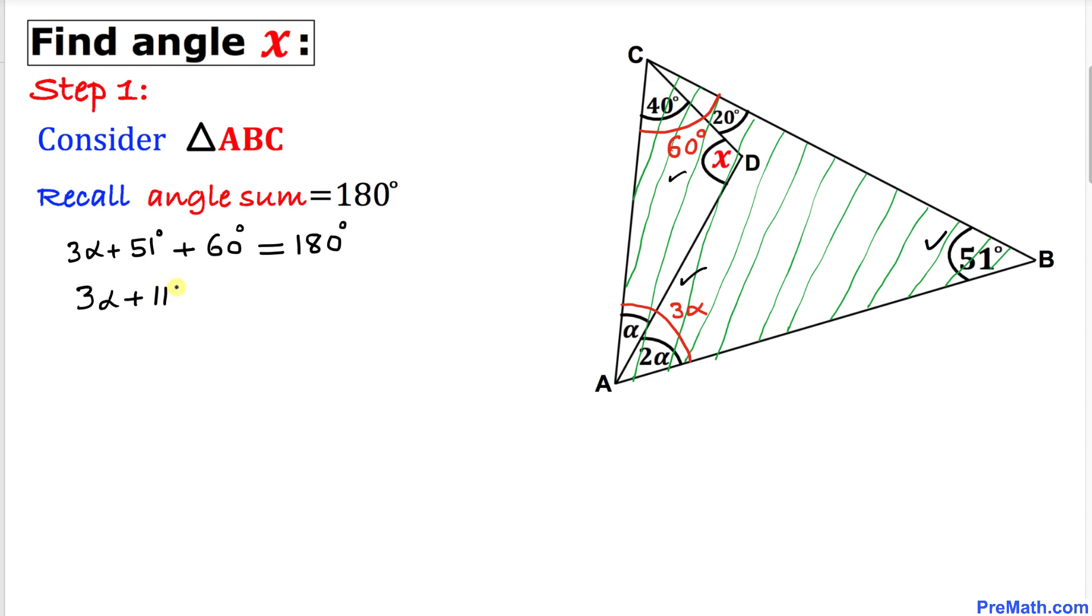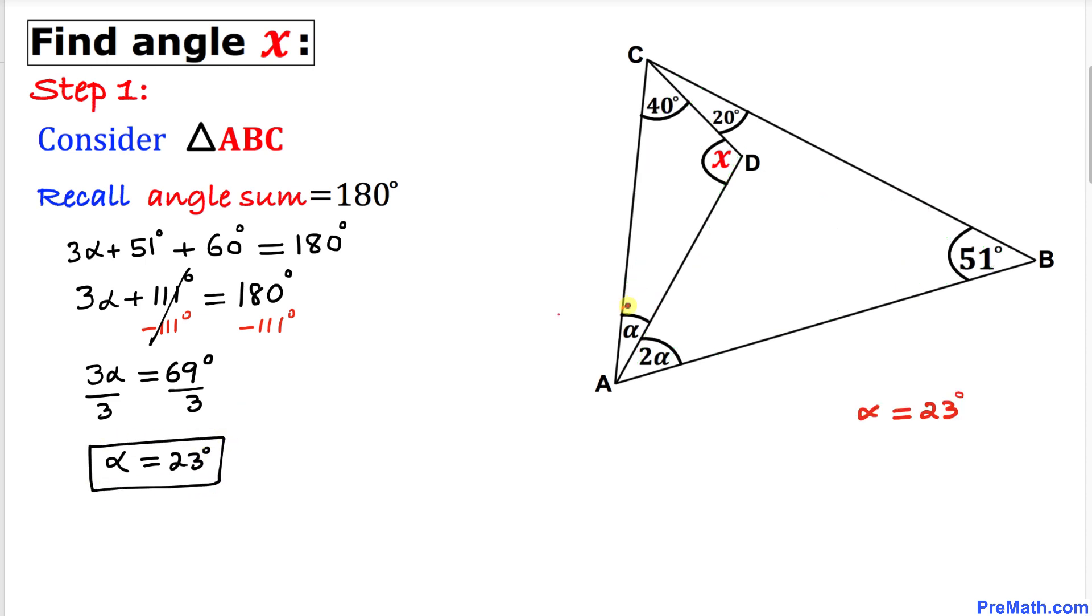Let's subtract 111 degrees from both sides. So we get 3 alpha equals 69 degrees. Let's divide both sides by 3 to isolate alpha. So alpha turns out to be 23 degrees. Therefore our angle alpha turns out to be 23 degrees.